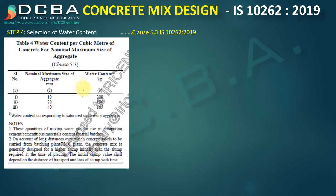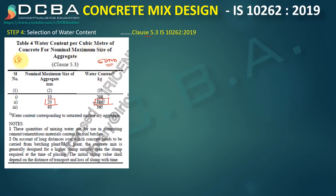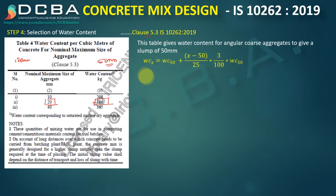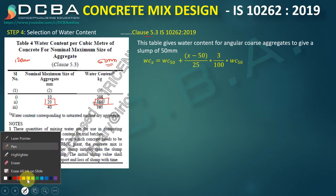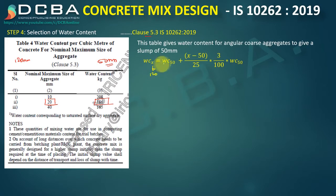Step 4 is selection of water content, which depends on nominal aggregate size, given in clause 5.3. For 20 mm aggregate, the water content is 186 kg, but this is for a slump of 50 mm. Our site requires 120 mm slump, so we must adjust. The formula from clause 5.3 is: WC at X mm slump = WC at 50 mm + [(X − 50)/25] × (3/100) × WC at 50 mm.